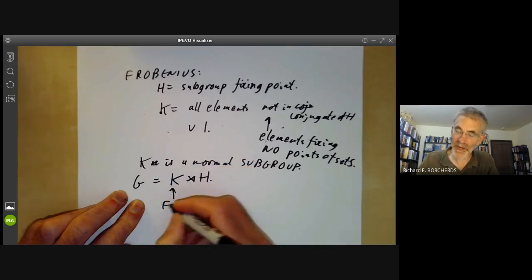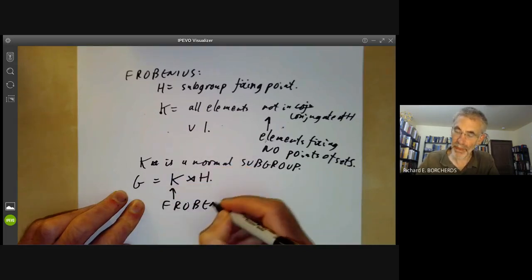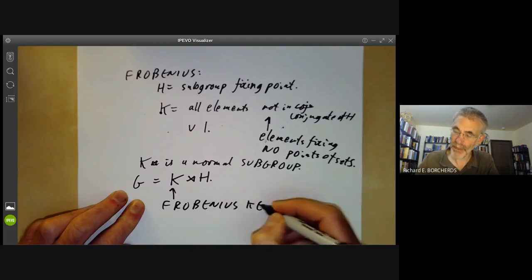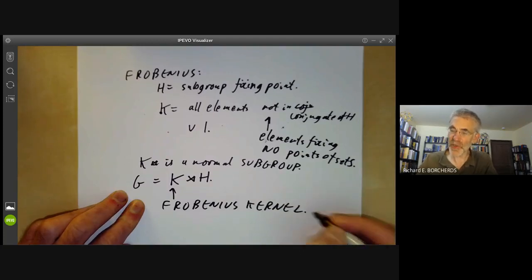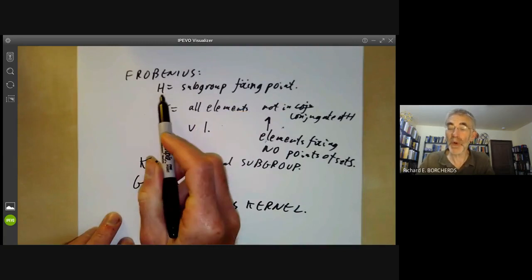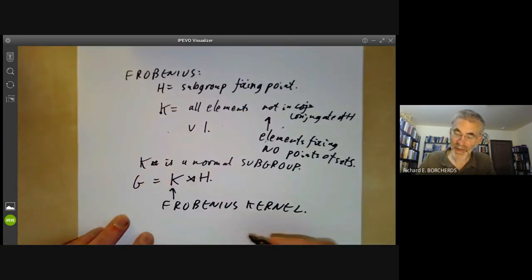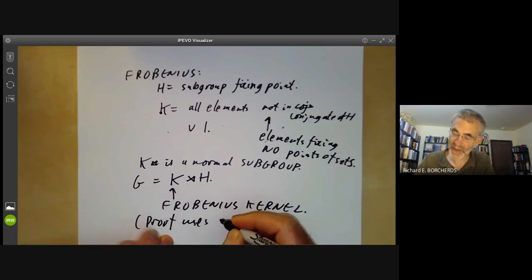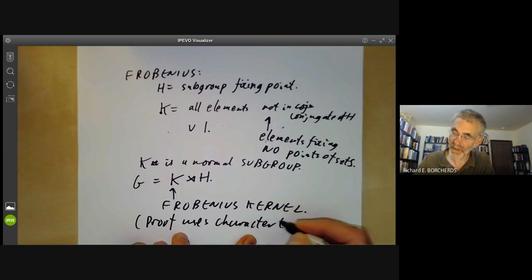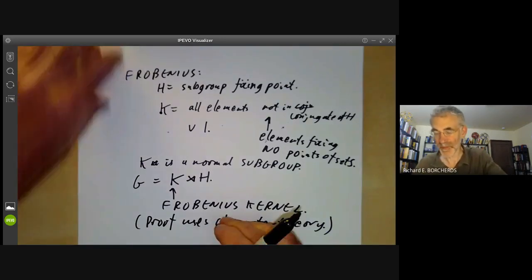So this group K is called the Frobenius kernel. So Frobenius proved that the Frobenius group actually has a homomorphism to H with kernel K. And the proof is not all that difficult, but it uses character theory of finite groups, which we haven't actually covered, so I can't give the proof.